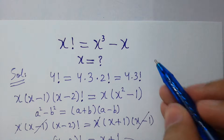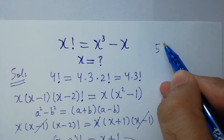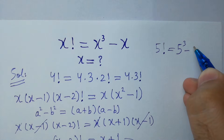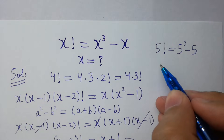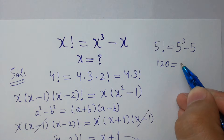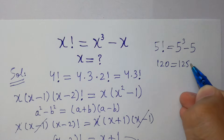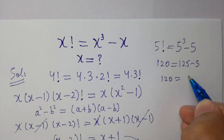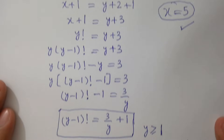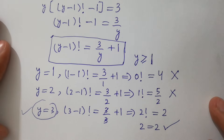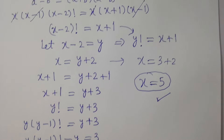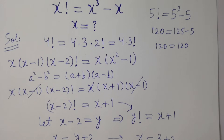Now let's verify: x factorial equals x cubed minus x. With x equals 5: 5 factorial equals 5 cubed minus 5. 5 factorial equals 120, and 125 minus 5 equals 120. So 120 equals 120, which confirms that x equals 5 is our correct answer. Thanks for watching this video. Please subscribe to this channel to get notifications of my new videos.